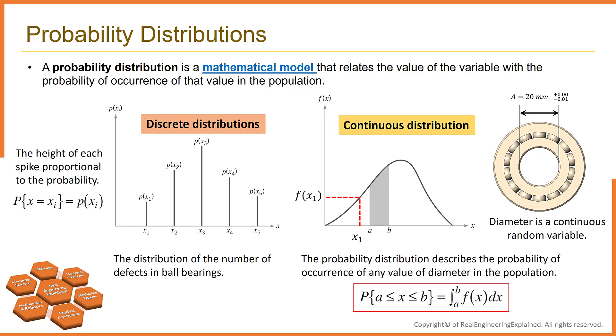There is another probability distribution, which is called discrete distribution. When the parameter being measured can only take on certain values, such as the integer 0, 1, 2, and so on, the probability distribution is called a discrete distribution. For example, the distribution of the number of defects in each ball bearing manufacturing line, or the number of defects per day would be a discrete distribution. One day it could be 5, another day 6, or another day 0. The height of each spike is proportional to the probability, the probability that the random variable x takes on the specific value xi as p of xi.